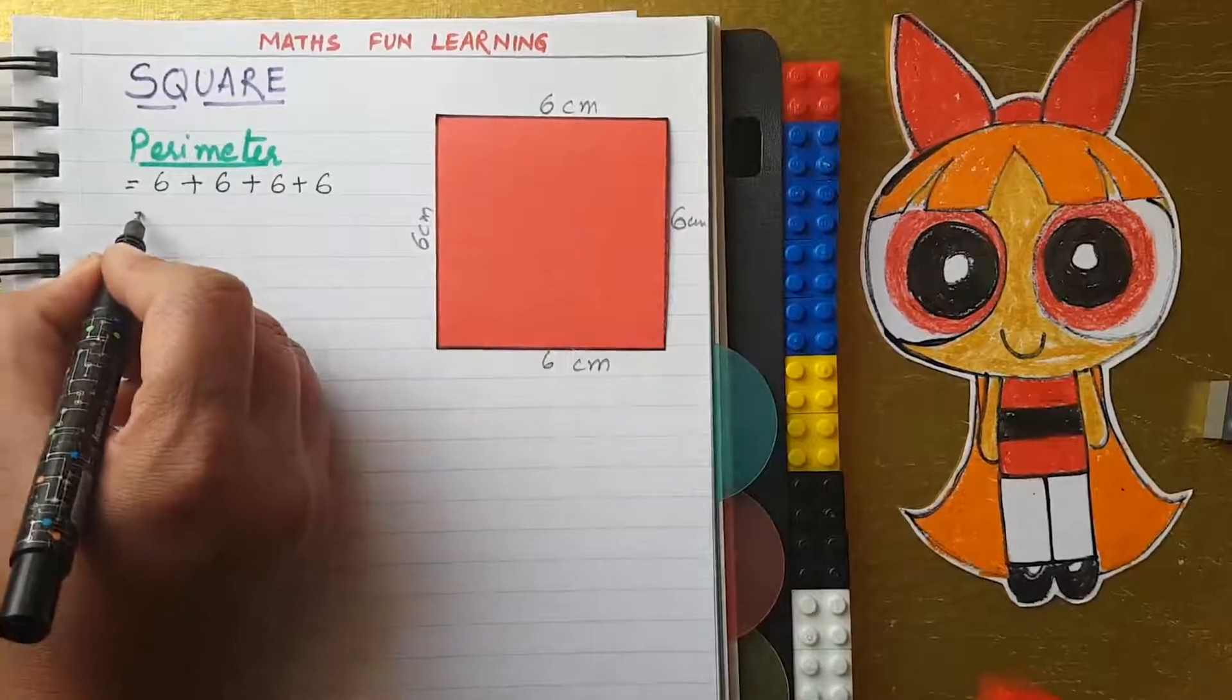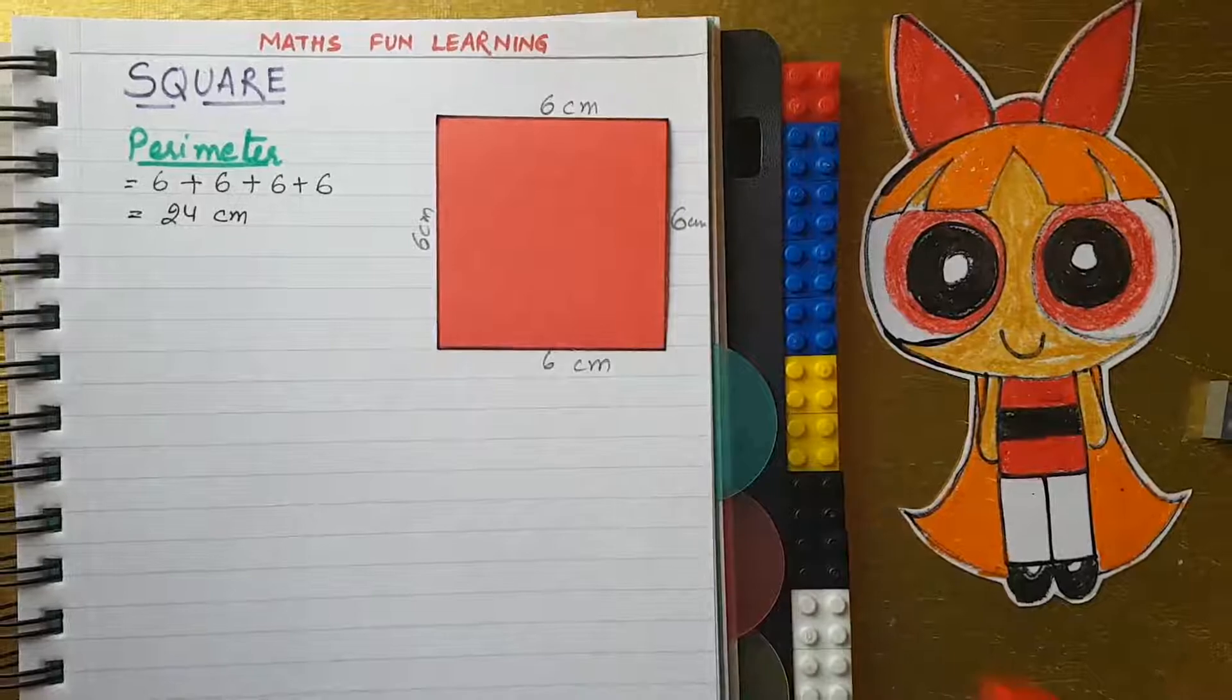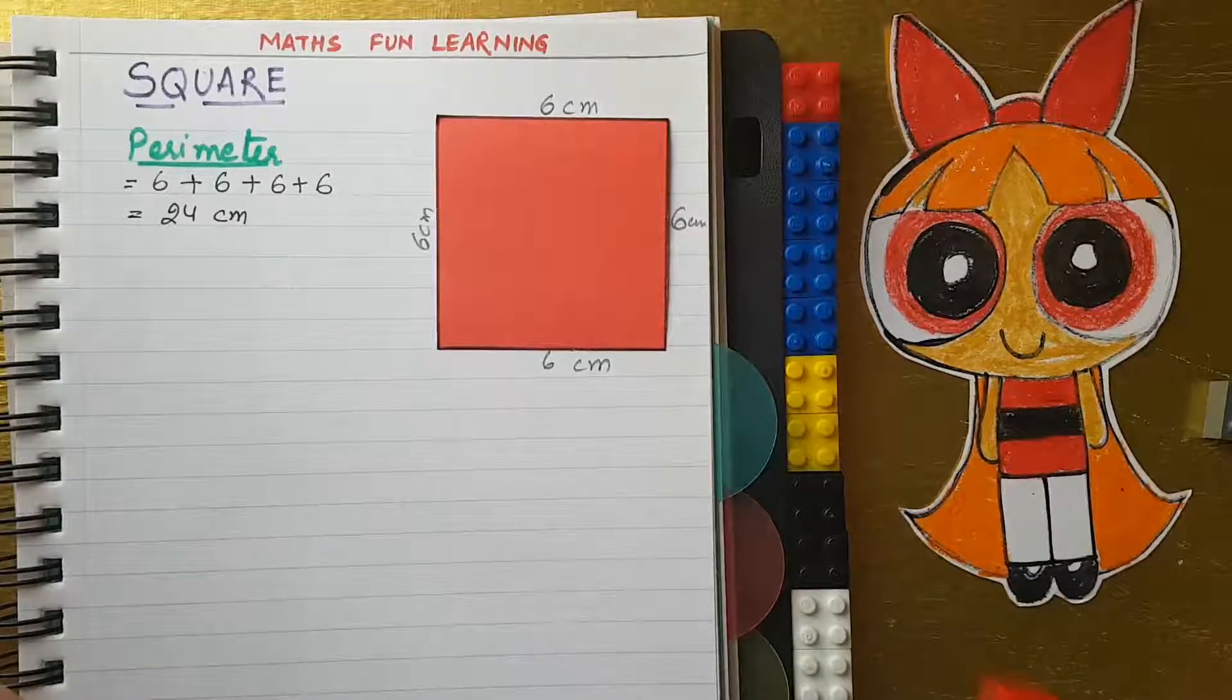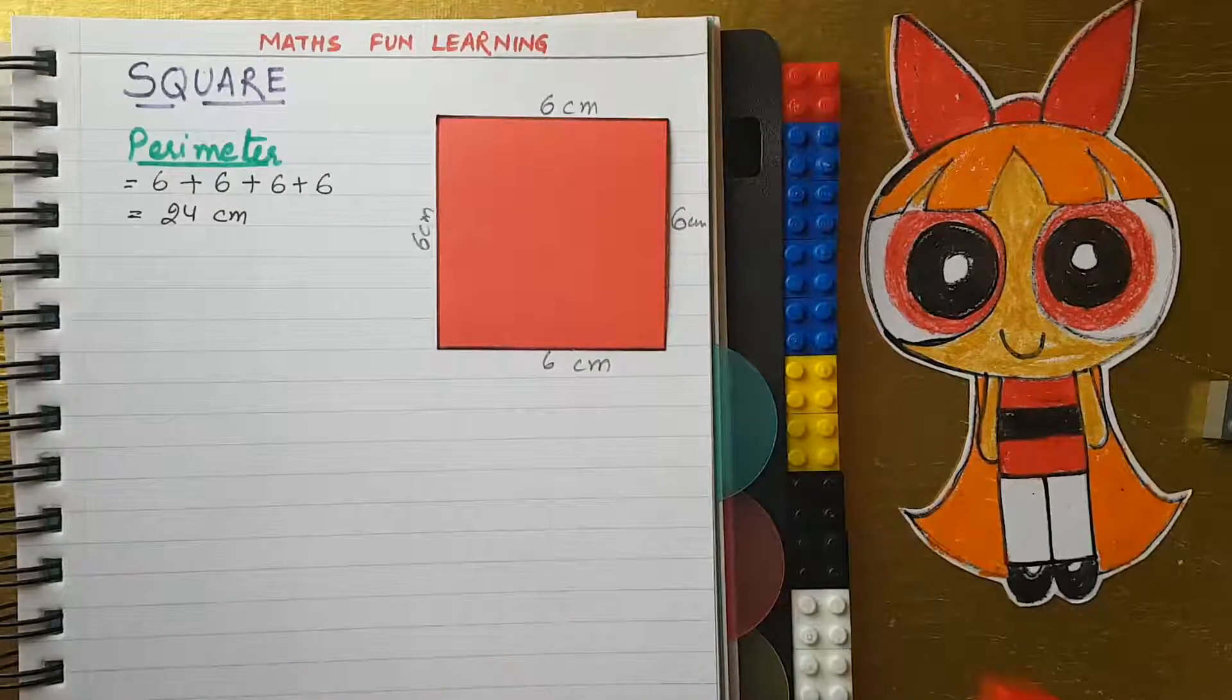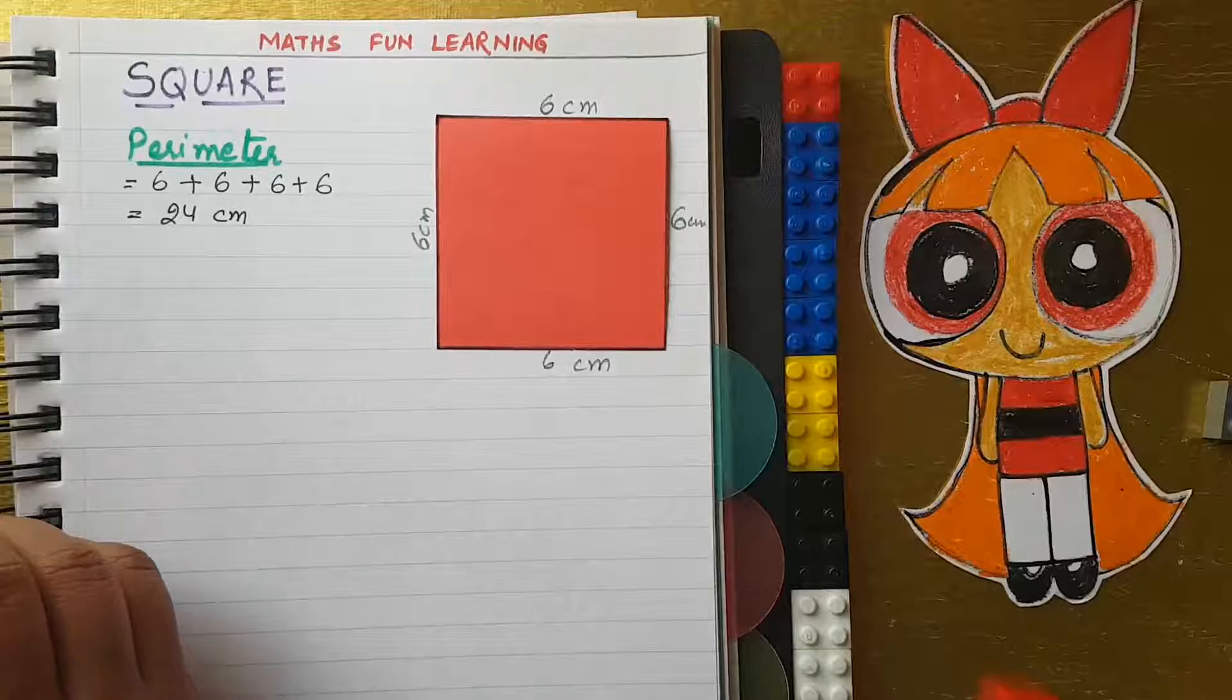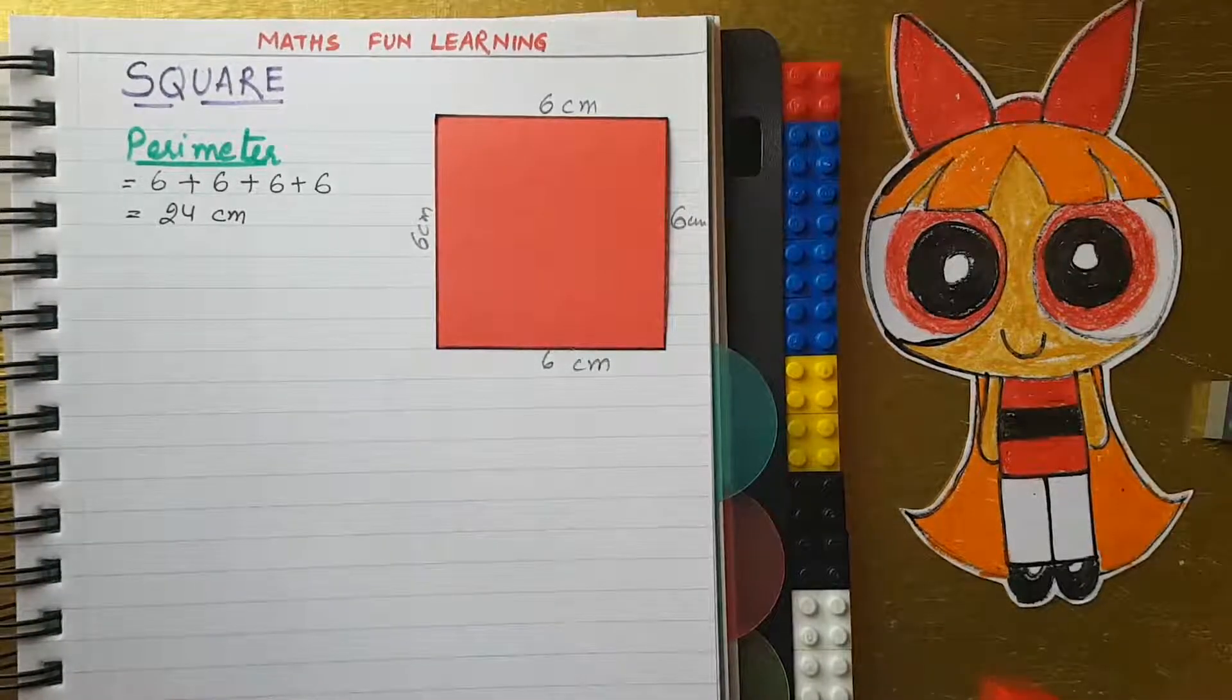That means we add here all sides: 6 plus 6 equals 12, 12 plus 6 equals 18, 18 plus 6 equals 24. Very good! 24 centimeters. So like that we can find the perimeter. But to be more easy, there is a formula of the perimeter of a square.